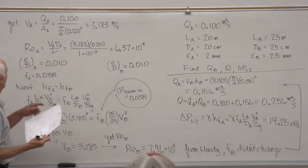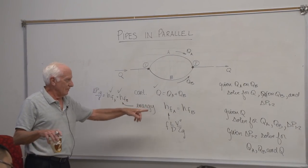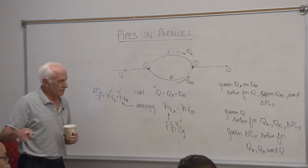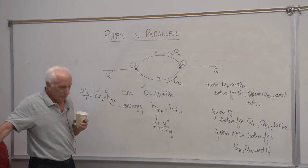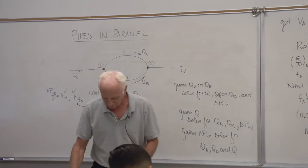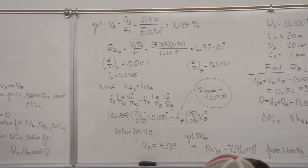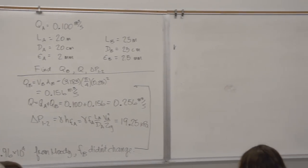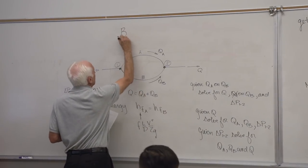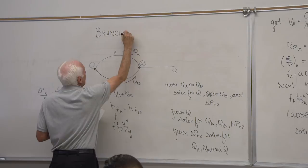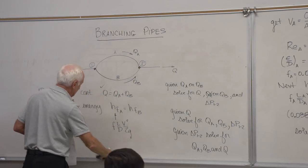That's the pressure drop from point one to point two with those two pipes in parallel. You approach these problems the same way whether it's pressure-driven or reservoir-driven with delta Z. That's the approach for all parallel pipe problems. Now our next topic is the last part of Chapter 6 material: branching pipes.